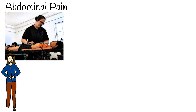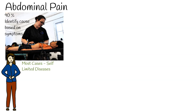Acute abdominal pain diagnosis can be challenging, as a variety of diseases can cause abdominal pain. A skilled clinician can identify the source of abdominal pain from the history alone 80-90% of the time. Most patients who present with acute abdominal pain will have self-limited disease processes, but some are life-threatening and require urgent medical attention. We will discuss the most common and important causes of acute abdominal pain.